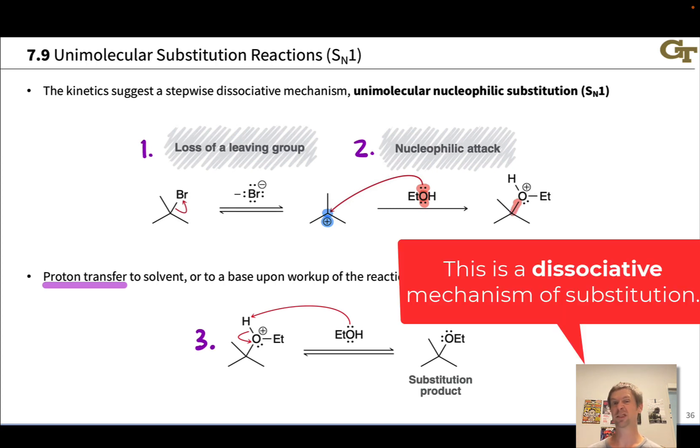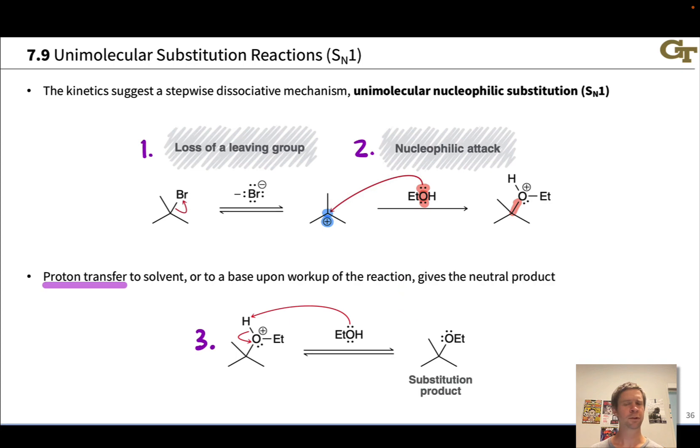So at this point, we've done the substitution. We have lost the leaving group in step one, and we have formed a new nucleophile carbon bond in step two. The last thing that needs to occur here to generate a neutral product is to lose a proton from the nucleophilic atom. The donation of an electron pair from the oxygen resulted in positive charge at that oxygen, and we lose that positive charge by transferring a proton here to the solvent.